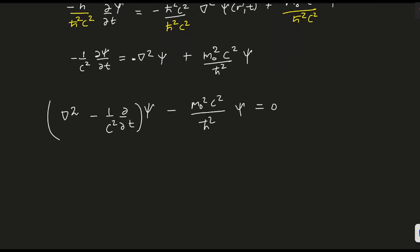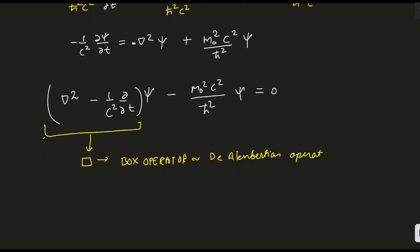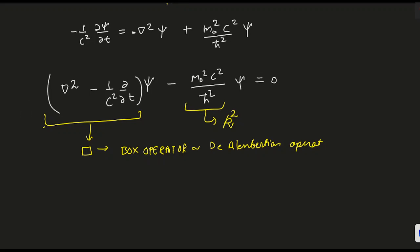Now you can see, you have seen this in most of the places like in electrodynamics. This is nothing but the d'Alembertian operator, also called the box operator, or d'Alembert operator. Let me represent this as kappa², substituting this value.